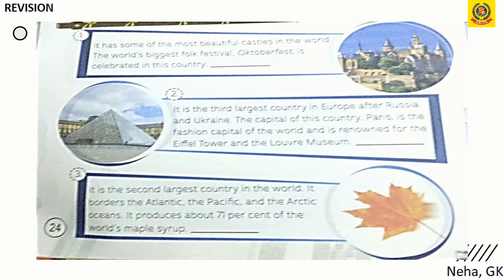Moving to Part A: read the clues to identify the countries. First, a country famous for beautiful castles and the world's biggest folk festival, Oktoberfest — the answer is Germany.